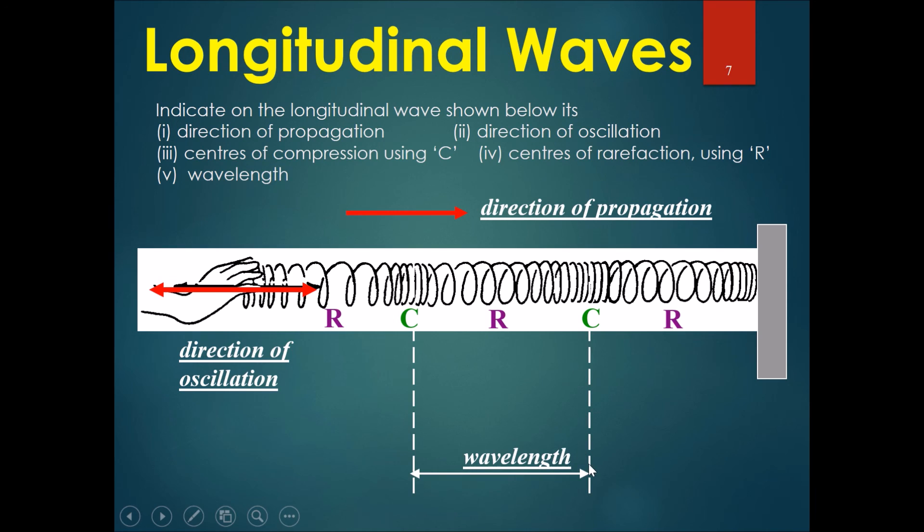A wavelength of a longitudinal wave can be found by taking the center of compression of one part and comparing it to the center of compression of the adjacent part.